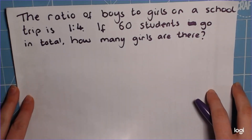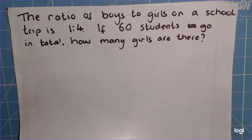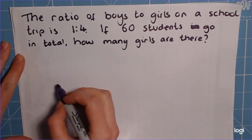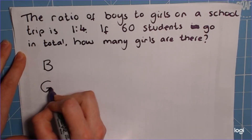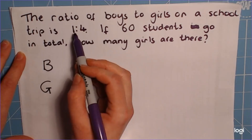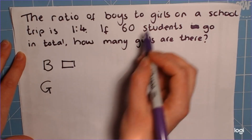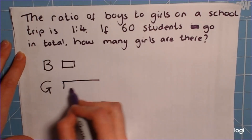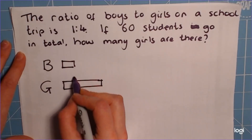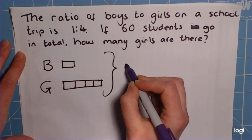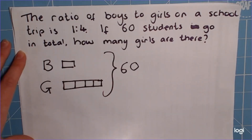The ratio of boys to girls on a school trip is 1 to 4. So for every one boy going, there are four girls going. If 60 students go in total, how many girls are there? So we're going to do pretty much the same technique here. Down the side we've got boys and girls. Remember the order is really important — the first number in our ratio is 1, so that must be the boys. The boys are getting just one little box this time, and the girls are going to get four boxes. All together this needs to equal 60.